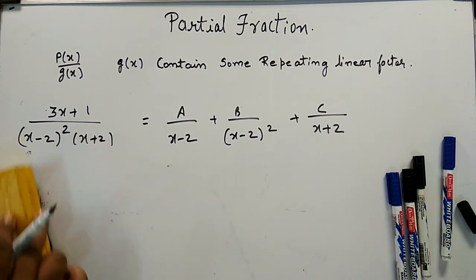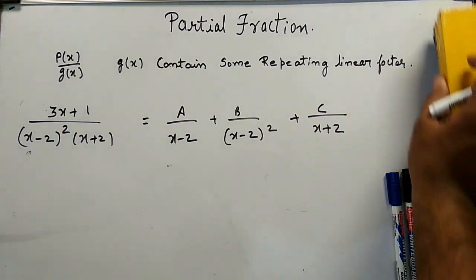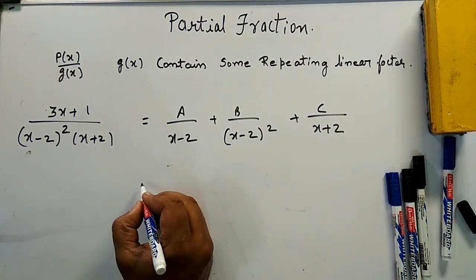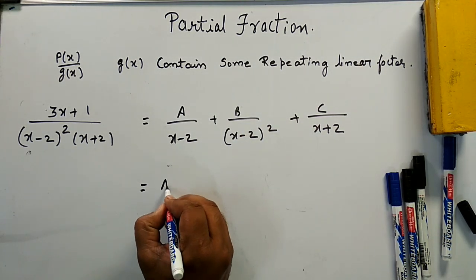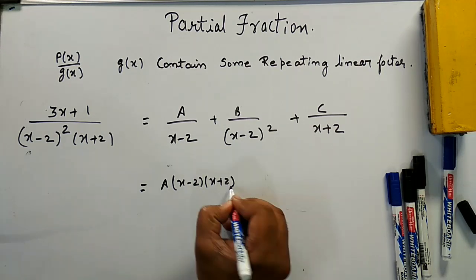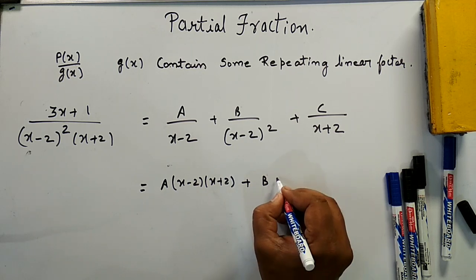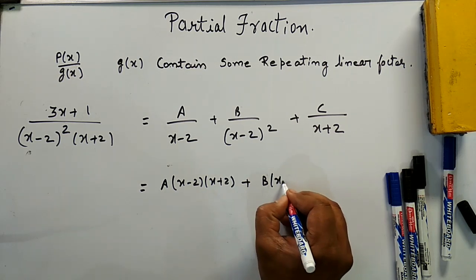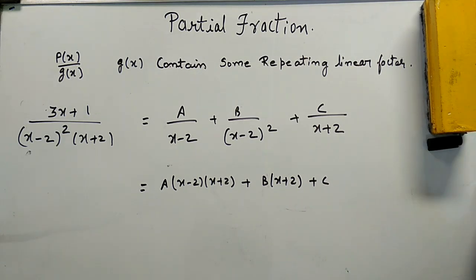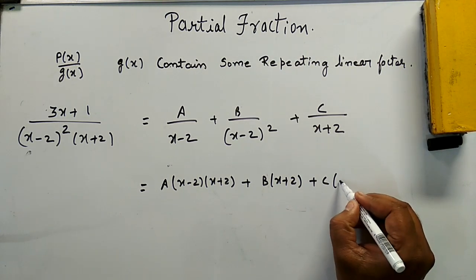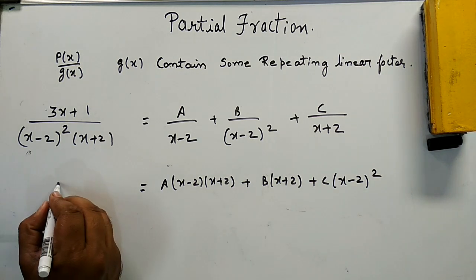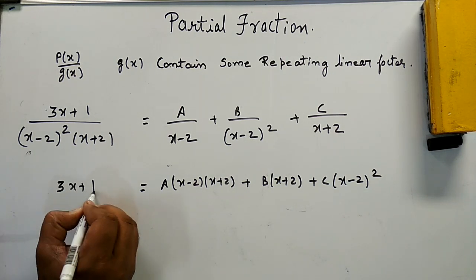If we take the sum of these three terms, we will get: A·(x - 2)·(x + 2) + B·(x + 2) + C·(x - 2)² = 3x + 1.